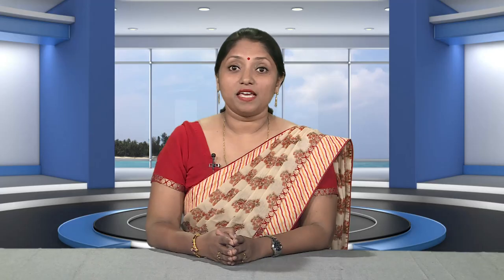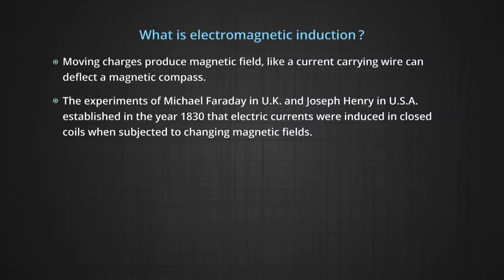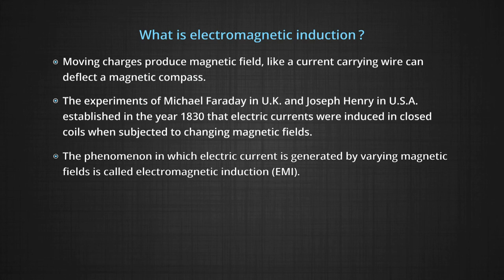What is electromagnetic induction? We have seen in earlier chapters that moving charges produce magnetic field, like a current carrying wire can deflect a magnetic compass. A very obvious question is whether the reverse is also true — can a moving magnet or a changing magnetic field also produce electric current? The answer is yes. The experiments of Michael Faraday in UK and Joseph Henry in USA established in the year 1830 that electric currents were induced in closed coils when subjected to changing magnetic fields. The phenomenon in which electric current is generated by varying magnetic fields is called electromagnetic induction.